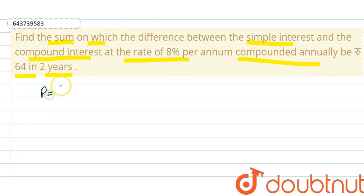simple interest and compound interest where some principle we don't know. So let sum be P. This is the amount, time here is 2 years, rate of interest is 8% per annum. Now calculate...